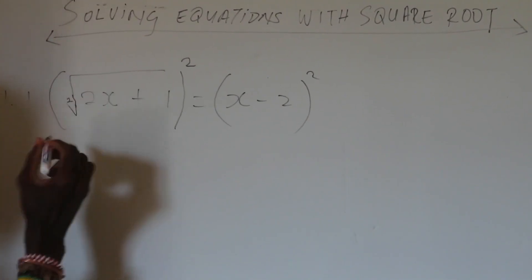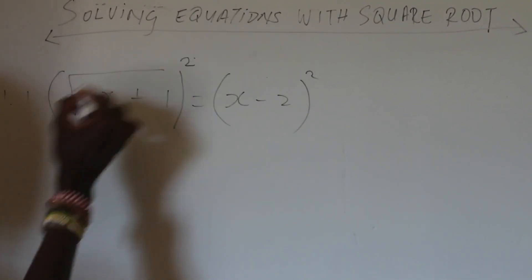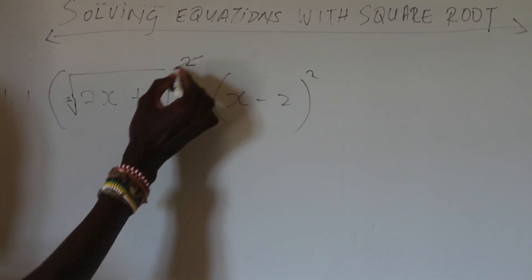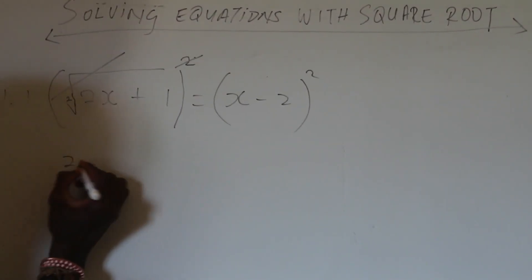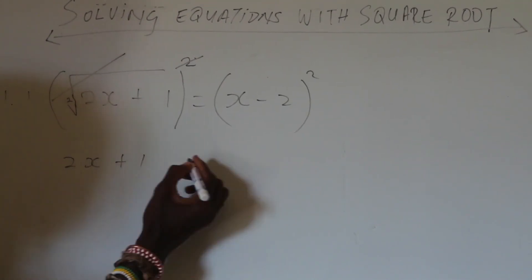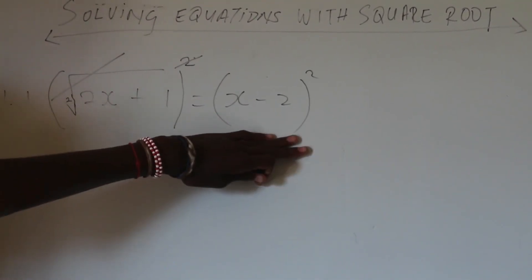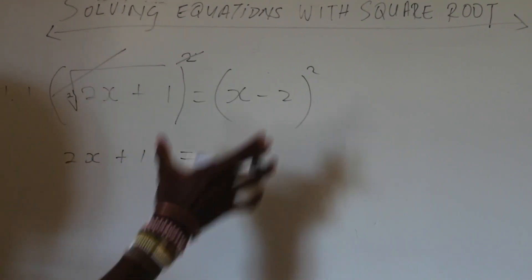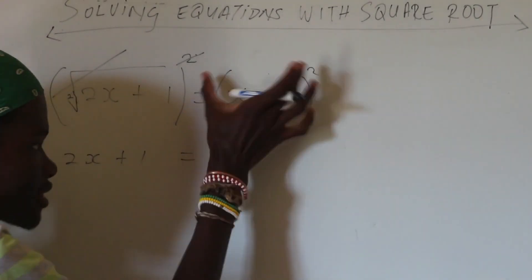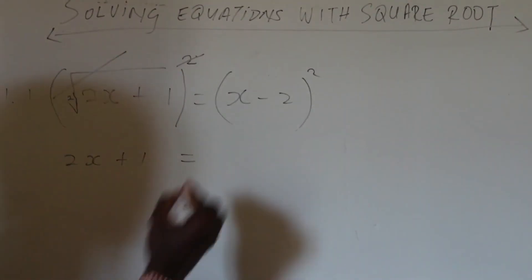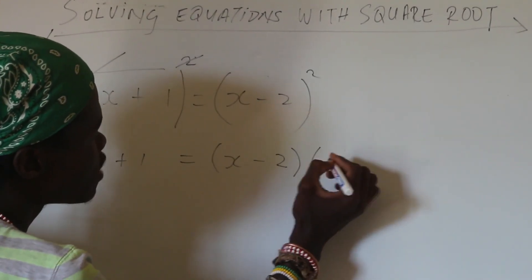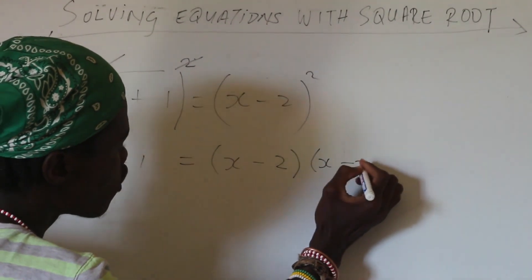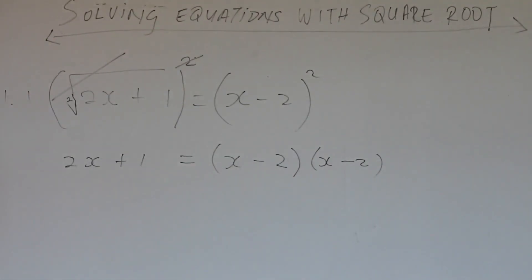So this kills this. And when this kills this we still have 2x plus 1. And now this side, when it's like this as a mathematician you must open up two brackets. It just means that you must square which means you must just multiply it by itself over and over again. Perfect.